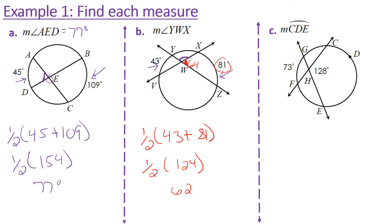We found the adjacent angle is 62 degrees. Since these angles are a linear pair — supplementary — and there are 180 degrees in a line, we subtract 180 minus 62 to get the measure of angle YWX, which equals 118 degrees.